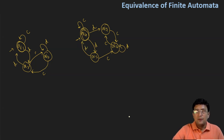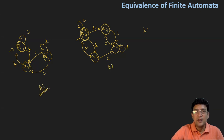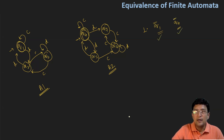With respect to the two automata, we'll perform some computations. The very first computation is we have to see if the initial state is also the final state in the first automata, A1, and in the second automata, A2. Q1 is the start state and final state in the first automata, and Q4 is the start state and final state in the second automata. So the start state should be the final state in both automata — this is the first thing we need to check.